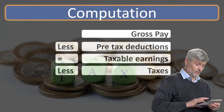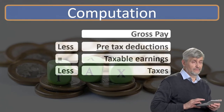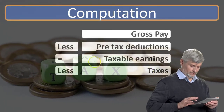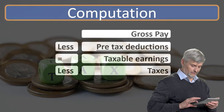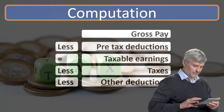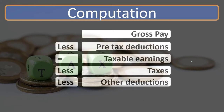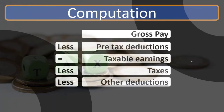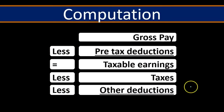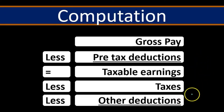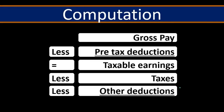Then we subtract out those taxes, which were calculated based on the taxable earnings. After that, we have the other types of deductions — everything else we need to take out. These other deductions don't affect the taxable earnings, which is why we take them out after calculating the taxes.